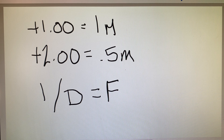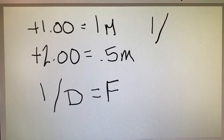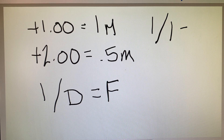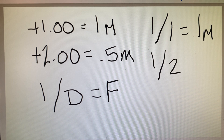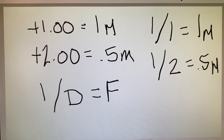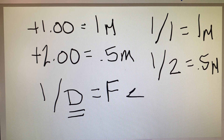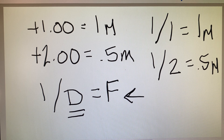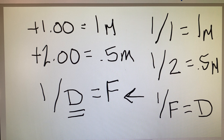We can apply that equation directly. For a one diopter lens: 1 divided by 1 equals 1 meter. Or 1 divided by 2 equals 0.5 meters. We can apply this equation both when given diopters and asked for focal length, and in reverse: 1 divided by focal length gives us the power of the lens.